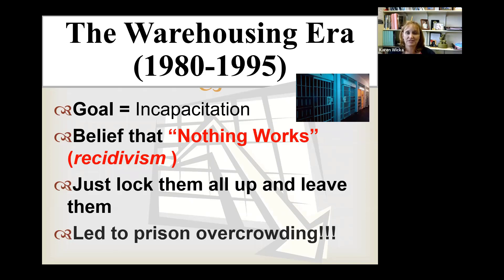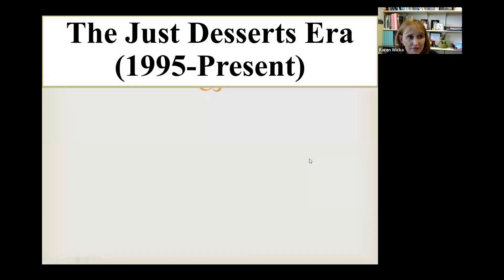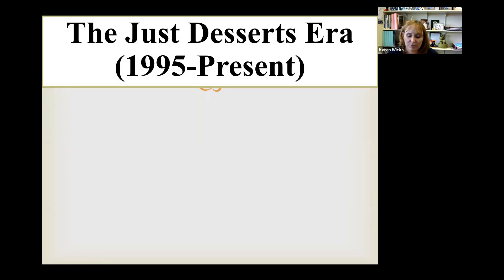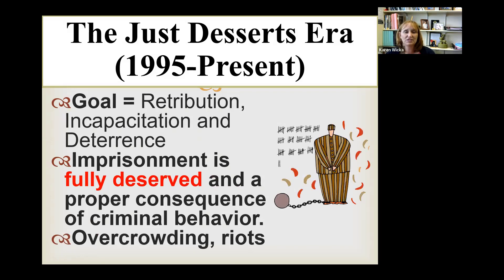This led to a massive prison overcrowding problem — two or three people per very small cell, creating almost unlivable conditions by cramming too many people into too small a space. It also sparked a prison building boom where we started constructing more and more prisons. Then we moved into what's called the just deserts era — a continuation of 'why bother with rehabilitation?' People just deserve what they get. If you commit a crime, your just deserts is to go to jail. This continued harsh punishments and long prison sentences for even relatively minor offenses, maintaining overcrowding conditions, prison riots, and horrible living conditions — an eye for an eye, retribution.